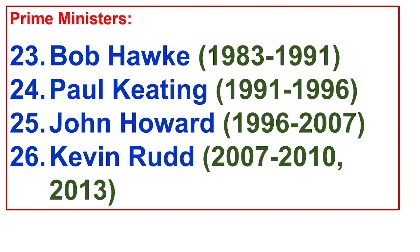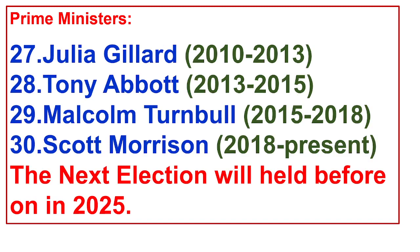26. Kevin Rudd from 2007 to 2010 and 2013. 27. Julia Gillard from 2010 to 2013. 28. Tony Abbott from 2013 to 2015. 29. Malcolm Turnbull from 2015 to 2018.